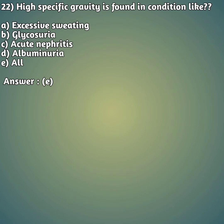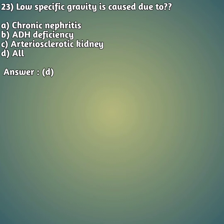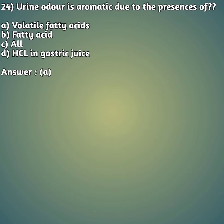Question 23: Low specific gravity is caused due to — option A: chronic nephritis, option B: ADH (anti-diuretic hormone) deficiency, option C: atherosclerotic kidney, option D: all. The right answer is option D, all.